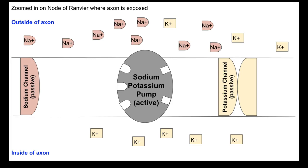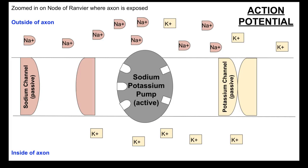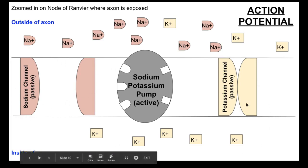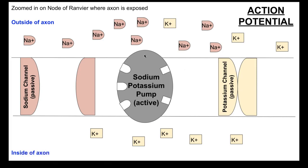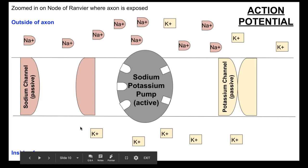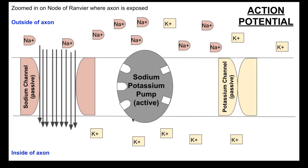Now we're going to move into the next stage: action potential. During action potential, we get a signal, and what happens is all of the sodium channels open wide and the potassium channels close. Because there's all that sodium on the outside, it's going to naturally want to move into the axon. Draw a bunch of sodium on the outside with a bunch of arrows coming to the inside — that's how a concentration gradient works. It's passive because all of the sodium wants to get to the other side.